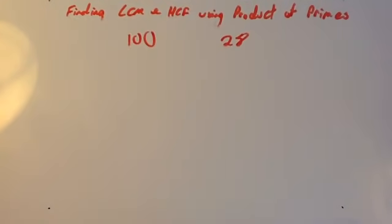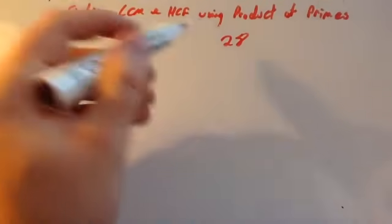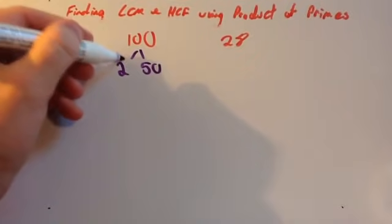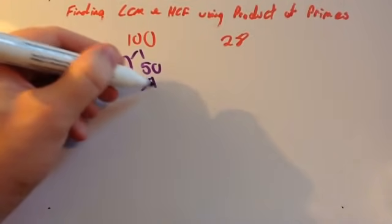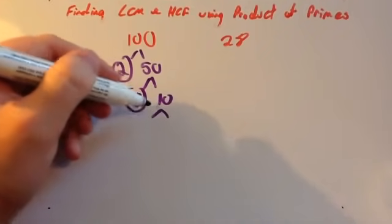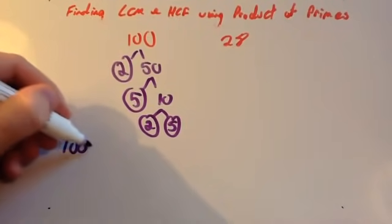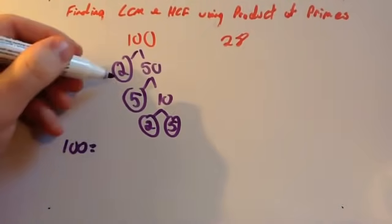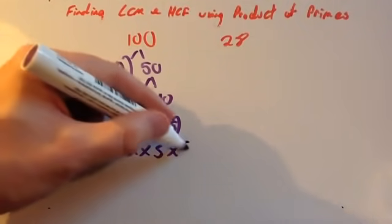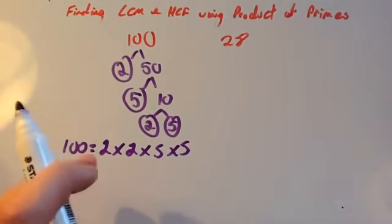Let's look at another example. We're now going to find the lowest common multiple and the highest common factor of 100 and 28. Again, you want to get each as a product of primes. 100 is 2 times 50; 2 is prime, 50 is not. 50 is 5 times 10; 5 is prime. 10 is 2 times 5, and they're both prime. So 100 equals 2 times 2 times 5 times 5, which we can write in numerical order as 2 times 2 times 5 times 5.